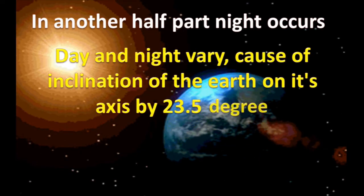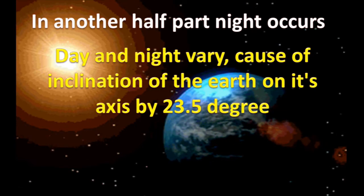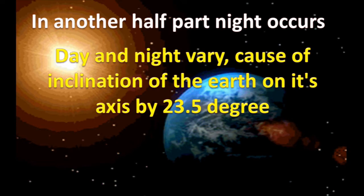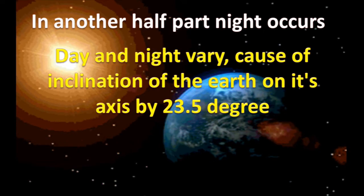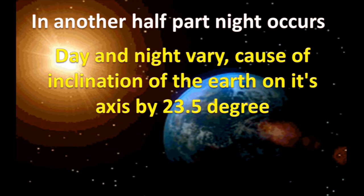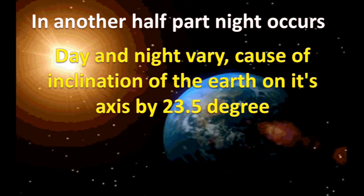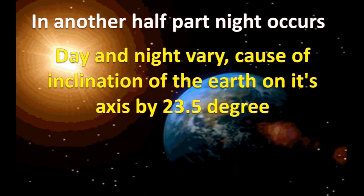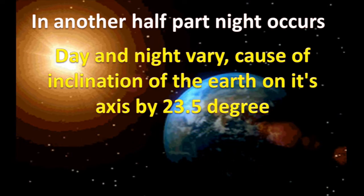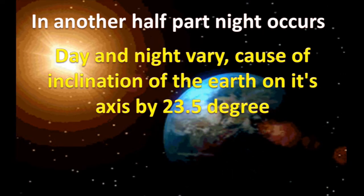Day and night vary from place to place and time to time because of the inclination of the earth on its axis at about 23.5 degrees. That inclination varies day and night. In different days, the length of day and night are different.